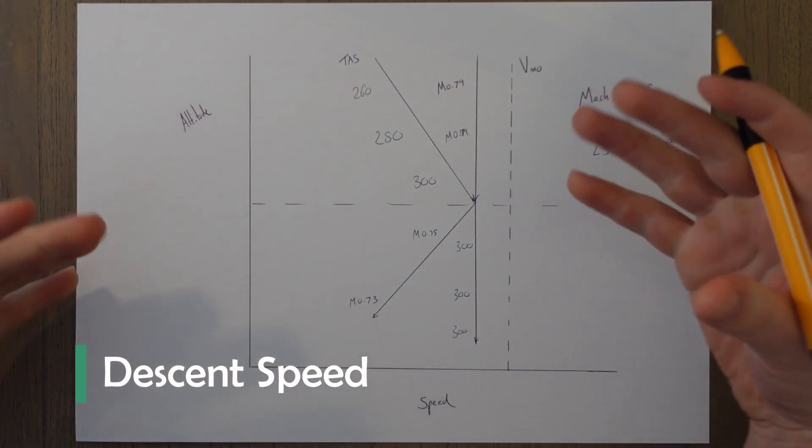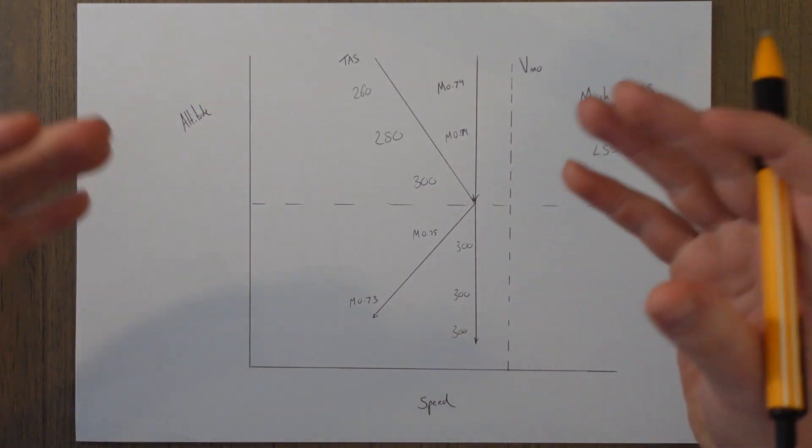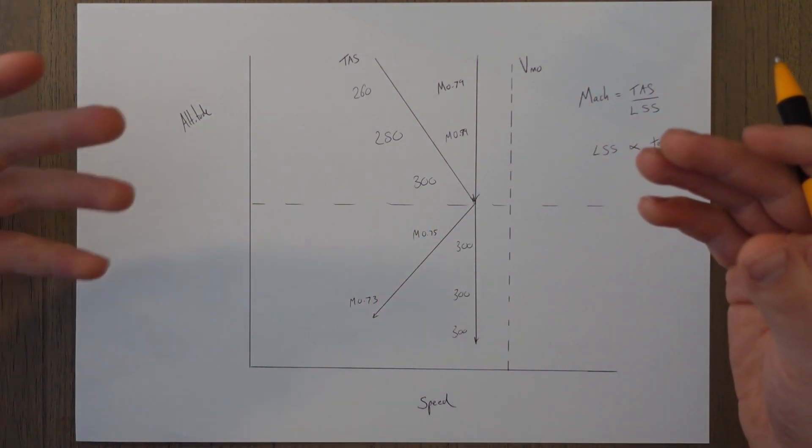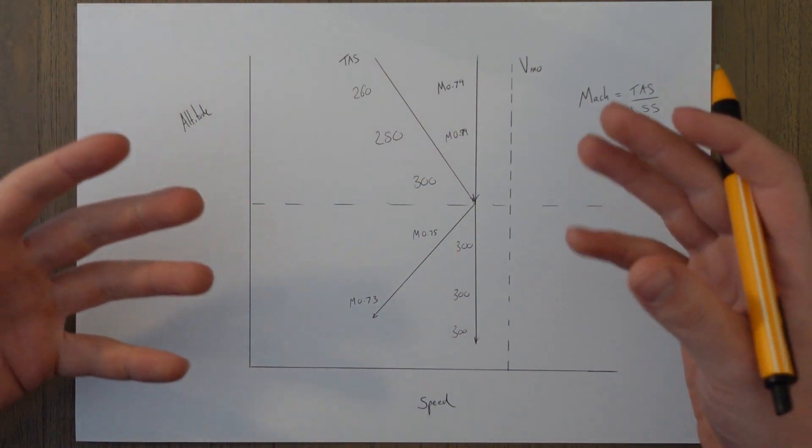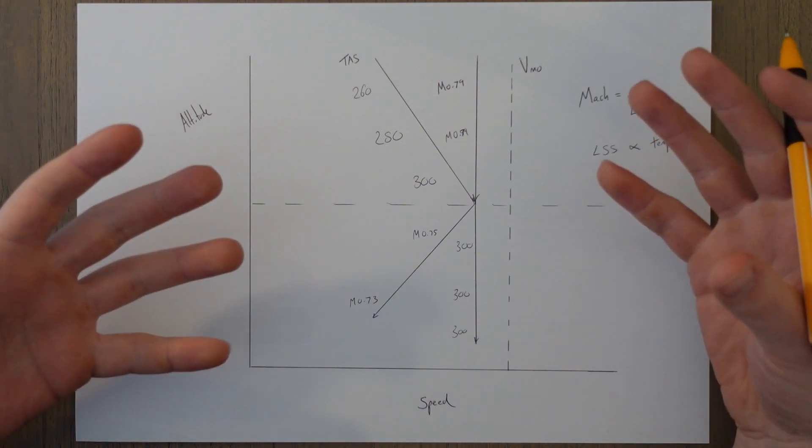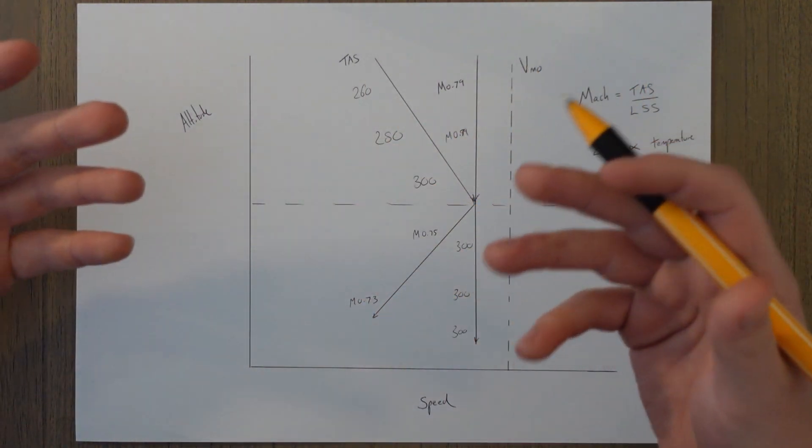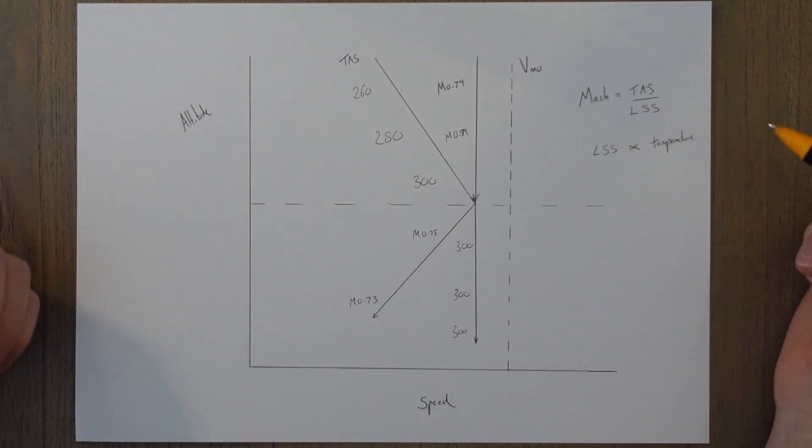So in the descent there's no ideal speed because it's all very situational on what we're trying to achieve. If we want a low angle we fly at VMD and a low rate it's just above VMP, but if we want max angle or max rate we basically want to fly as fast as we can. So while there's no set descent speed we do need to consider what type of speed we descend with to keep within the structural limitations of the aircraft.